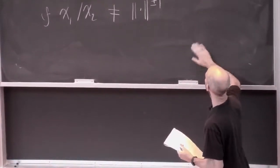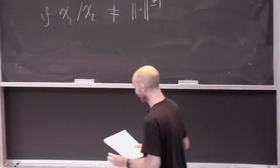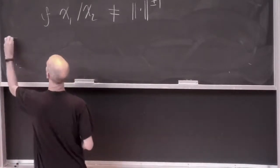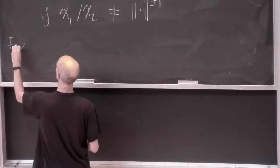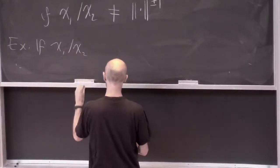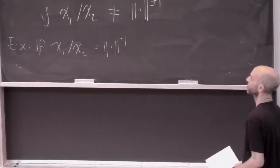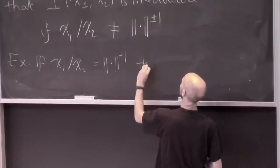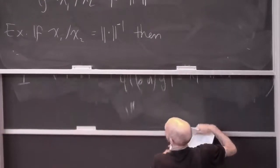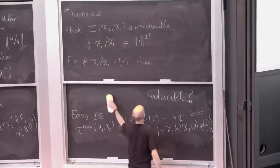So it turns out I(χ₁, χ₂) actually is irreducible if χ₁/χ₂ is not equal to |·|^(±1). That's the justification for this weird fudge factor: if you take out the fudge factor and do I_naive, the two bad cases are when the ratio is trivial and when the ratio is either the square or the reciprocal of the square of the norm. I'm convinced the fudge factor is worth carrying around because we get clean results like this.